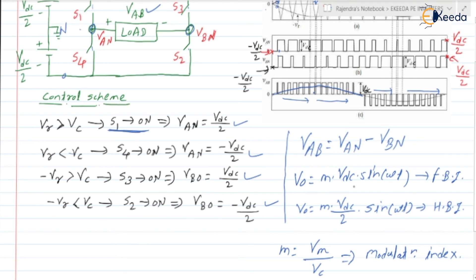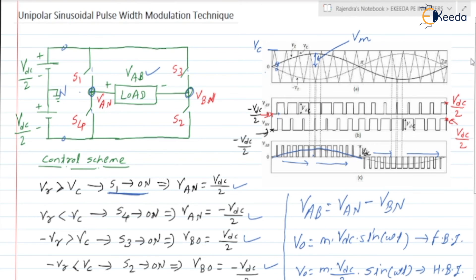We need to memorize this expression: V0 is equal to M·VDC·sin(ωt) for full bridge, and M·VDC/2·sin(ωt) for half bridge. This is a sinusoidal expression giving instantaneous values. Omega is 2πf, where f is the output frequency of the inverter. This is about the unipolar sinusoidal pulse width modulation technique. In the next video, we are going to discuss the numericals related to the sinusoidal pulse width modulation technique.